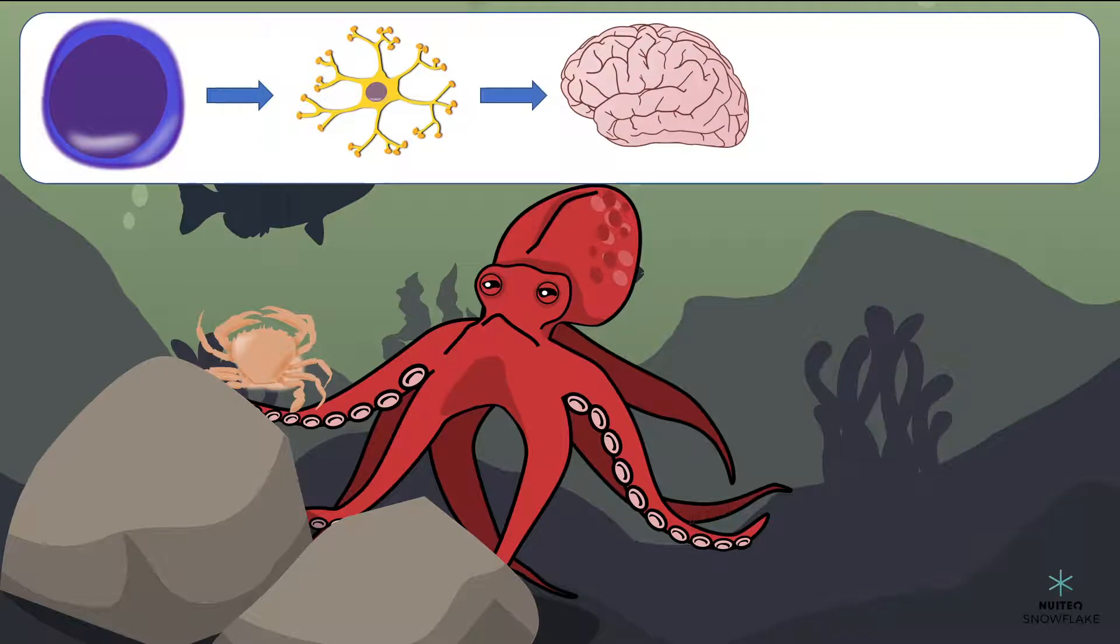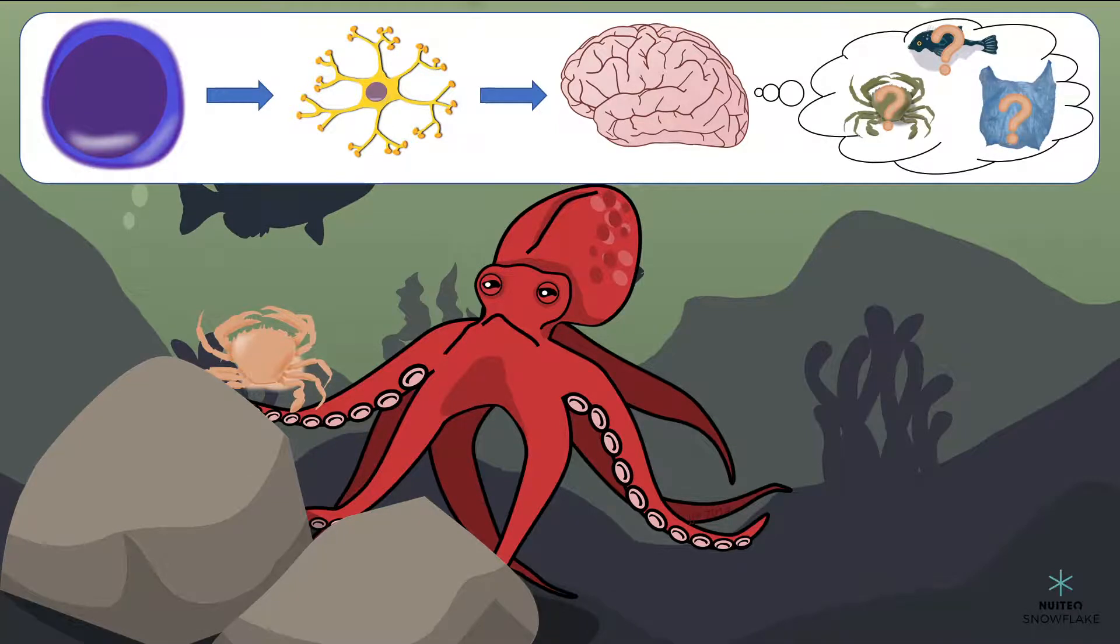The brain then compares this information with other information it already has stored. Like what? Like, if the octopus has tasted something similar before, and was it okay to eat.